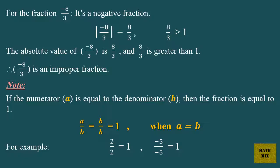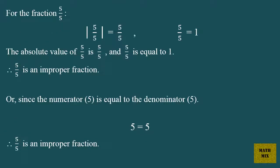Note: if the numerator a is equal to the denominator b, then the fraction is equal to 1. A over B equals B over B, which equals 1, when a equals b. For example, 2 over 2 equals 1, and minus 5 over minus 5 equals 1. For the fraction 5 over 5, the absolute value of 5 over 5 is 5 over 5, and 5 over 5 is equal to 1. Therefore, 5 over 5 is an improper fraction. Or, since the numerator 5 is equal to the denominator 5, therefore 5 over 5 is an improper fraction.